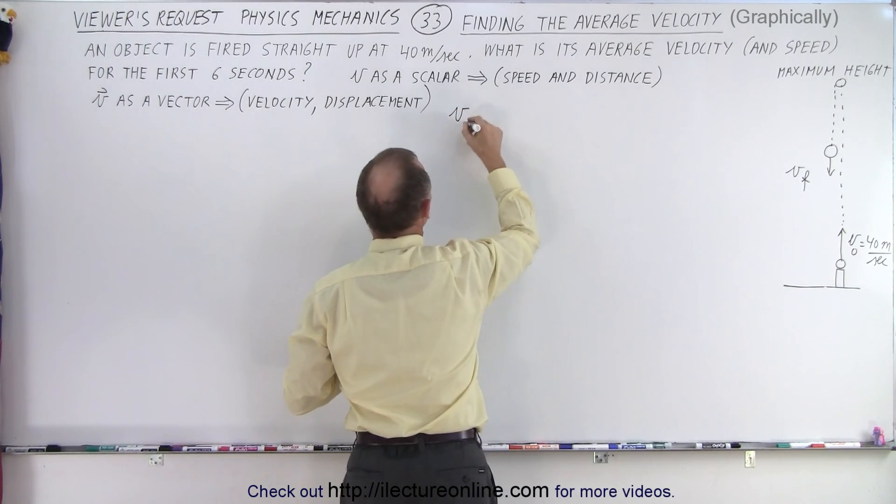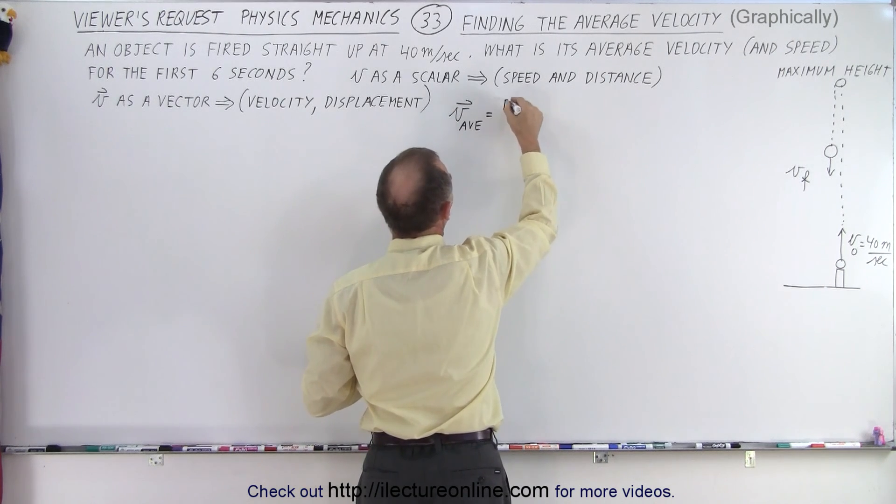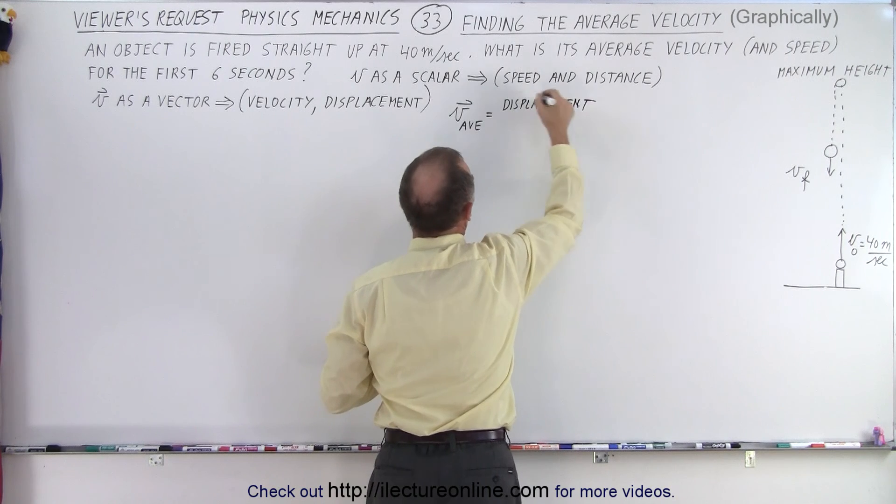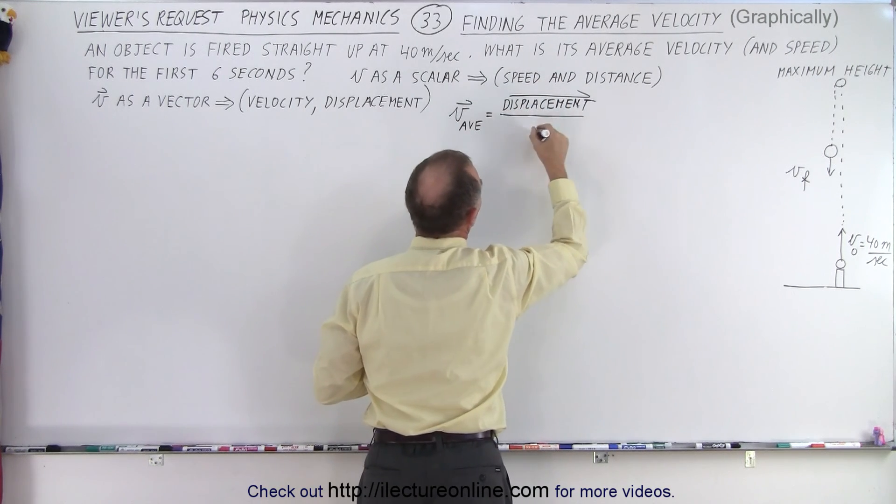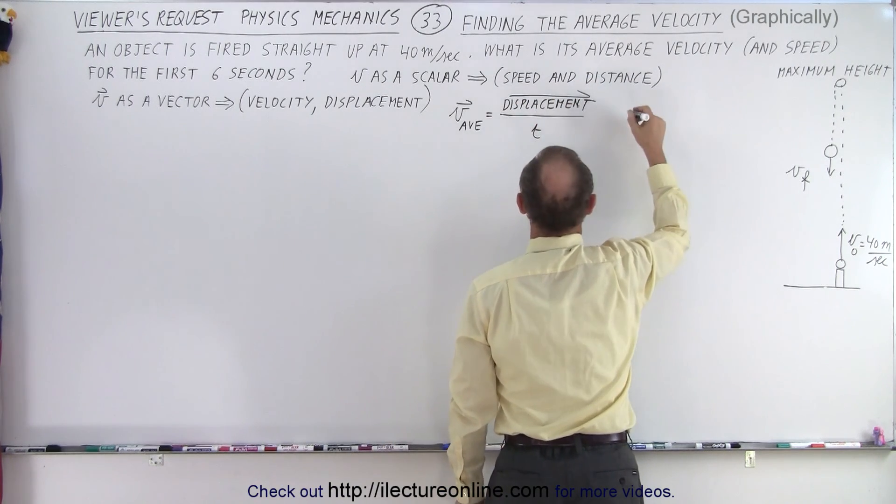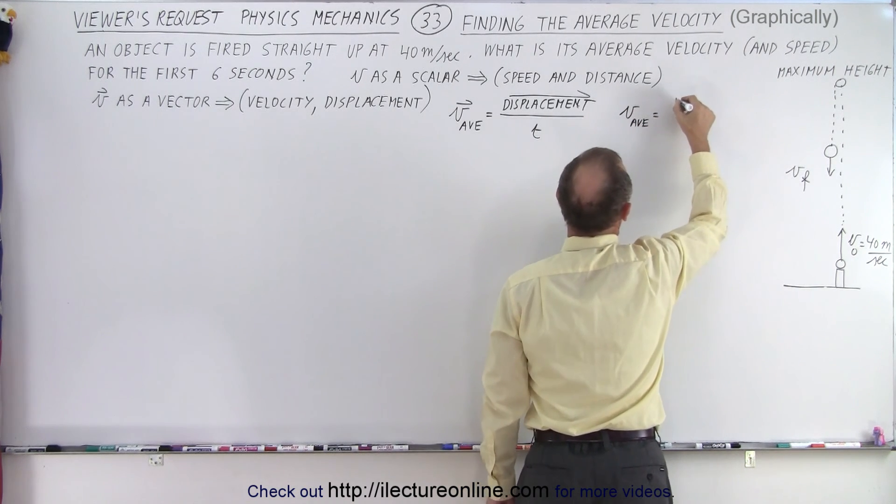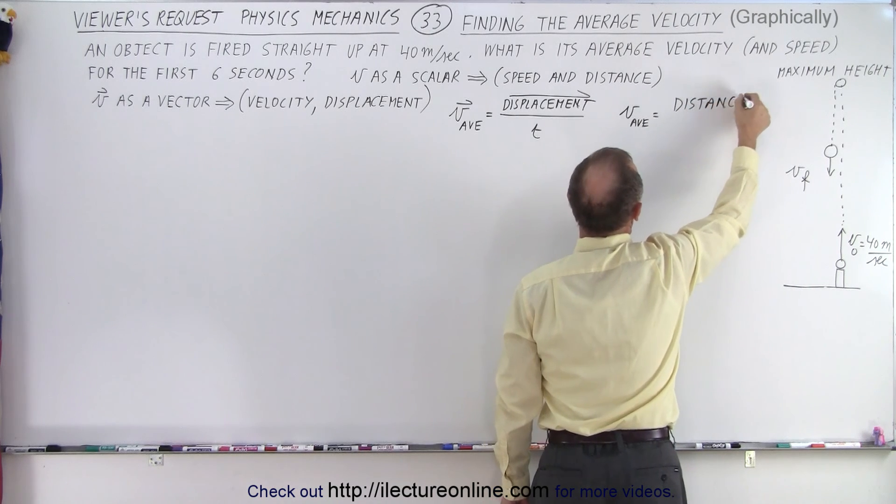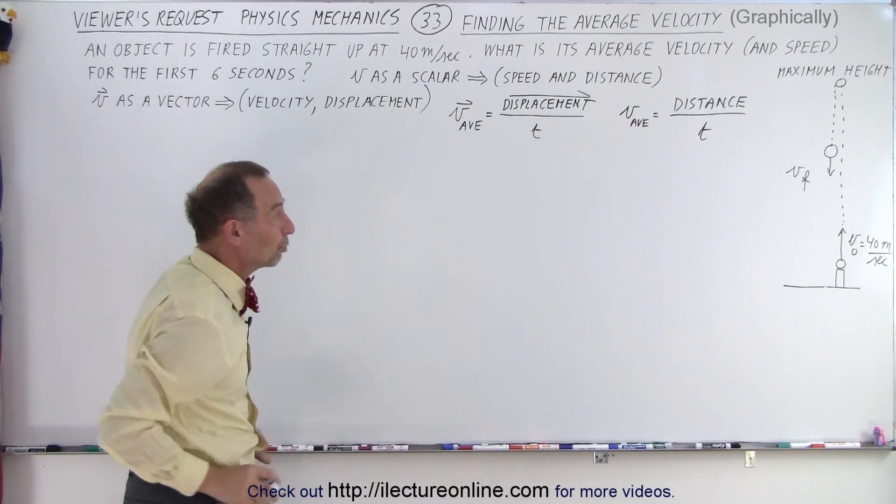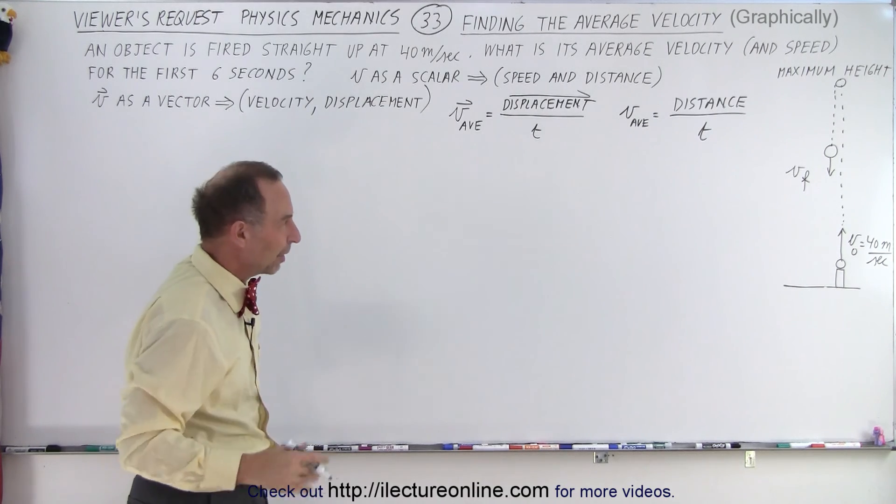In both cases, the definition of the average velocity or the average speed, you can say that V average, if we're going to do it as a vector, that's going to be equal to the displacement divided by the time. If we solve it as a scalar quantity, then the average speed is equal to the total distance divided by the time. Now let's solve it in a way that we can solve it both ways at the same time.